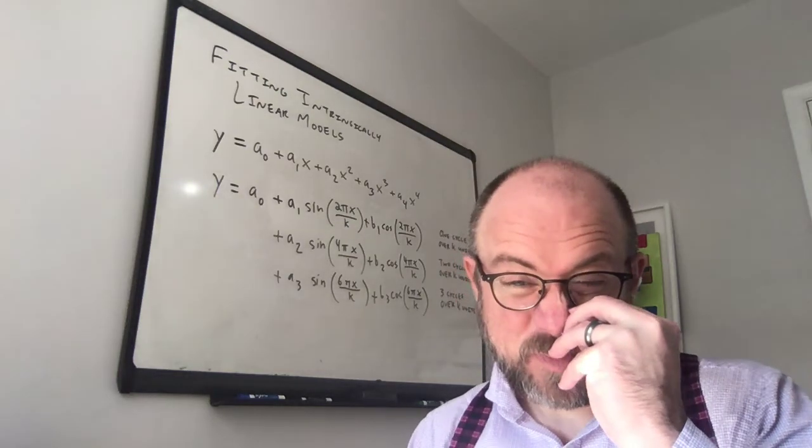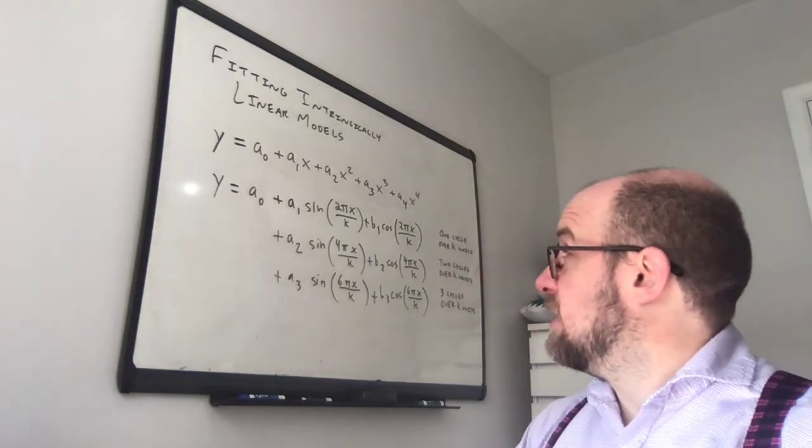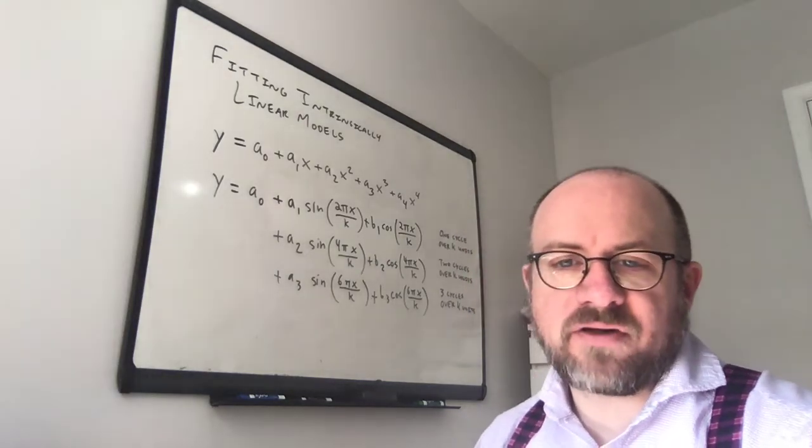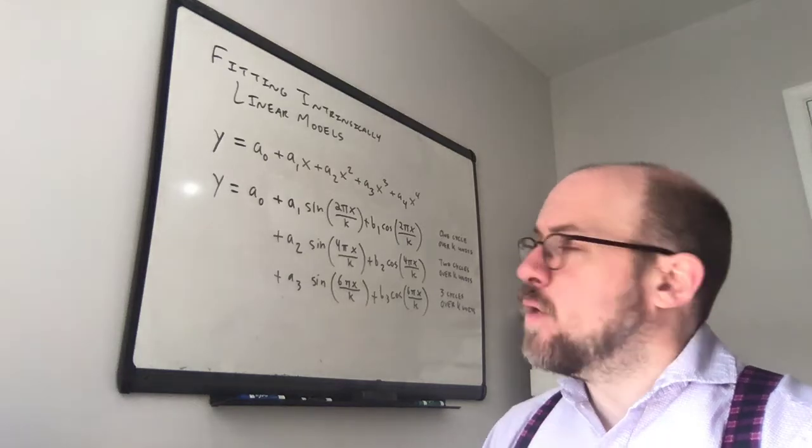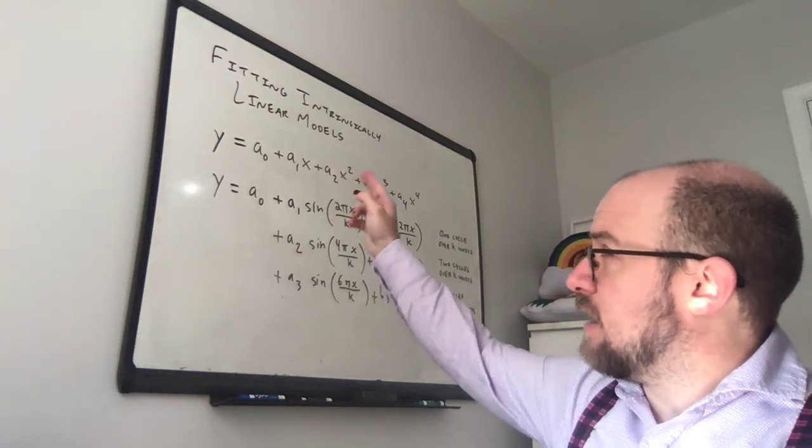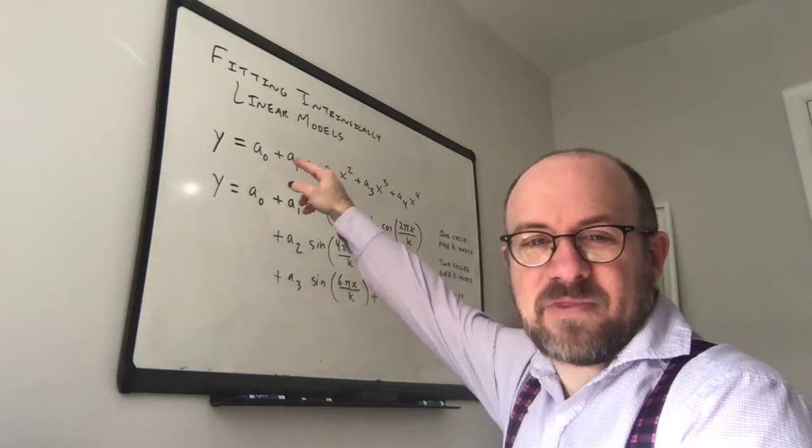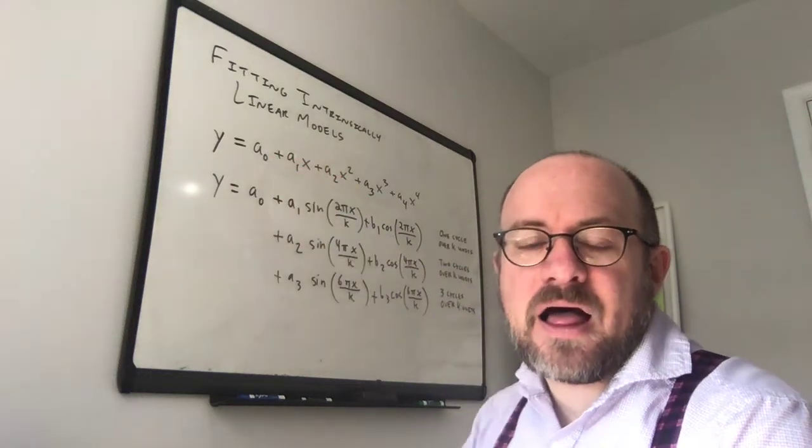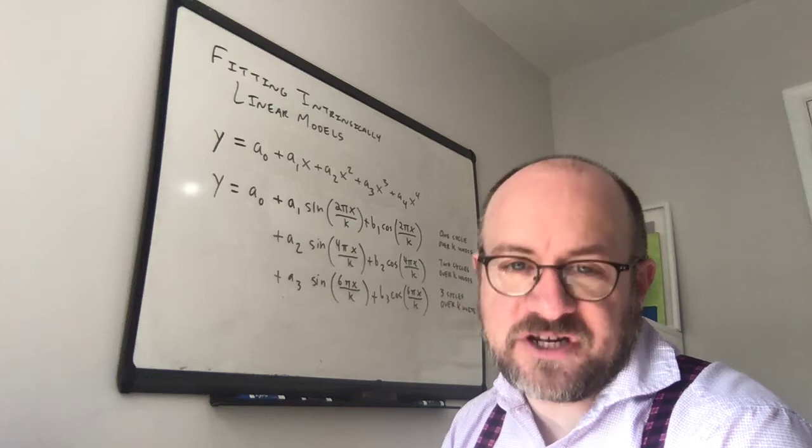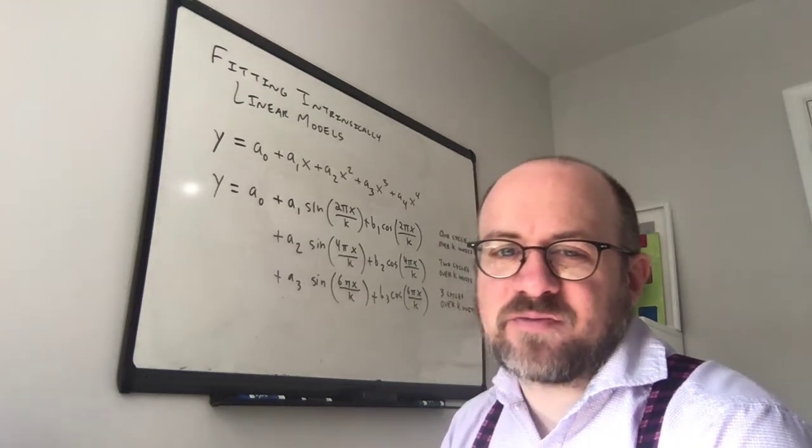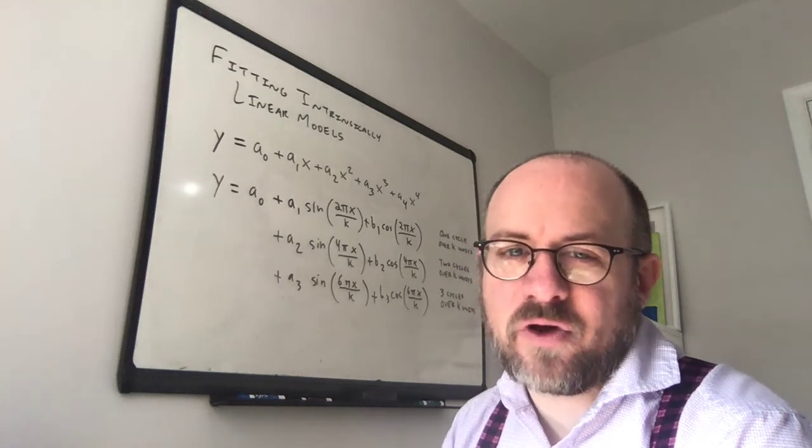So we're going to start off with fitting intrinsically linear models. So intrinsically linear models, remember, are models of this form where you have a coefficient times a function of x, which in this first case is just the function 1, then a coefficient times a function of x, in this case x, coefficient times a function of x, which might be x squared, coefficient times a function of x, and so on.